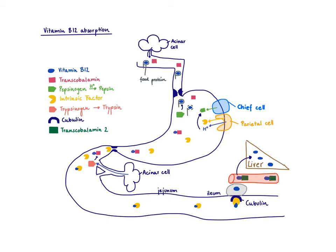In the stomach, the chief cells release pepsinogen, which is activated by acid to become pepsin. Pepsin degrades the food proteins, freeing the vitamin B12. Now transcobalamine is happy and binds to vitamin B12. However, the stomach also produces another molecule — intrinsic factor, from the parietal cells — which also wants to bind to vitamin B12, but it can't because transcobalamine has taken over. So intrinsic factor follows along.